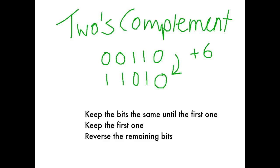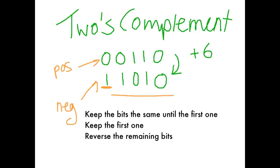Now this looks nothing like a negative 6 but it is a negative 6. And if we had been given the negative representation we could follow the same process of taking a 2's complement to determine what number it was the negative representation of. The key hint: the leftmost bit being a 1 means it is a negative number, and if the leftmost bit is a 0 it means it is a positive number.